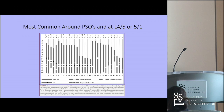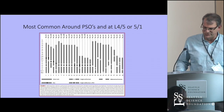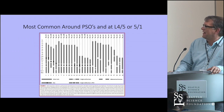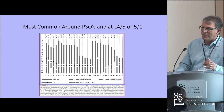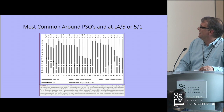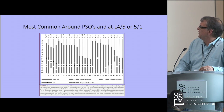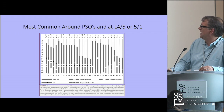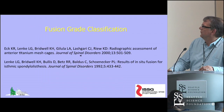In PSO patients, rod fractures typically occur around the osteotomy site, whereas in non-PSO patients there is more scattering, with a fair number occurring down near the lumbosacral junction at L5-S1, which tends to be the highest risk location.